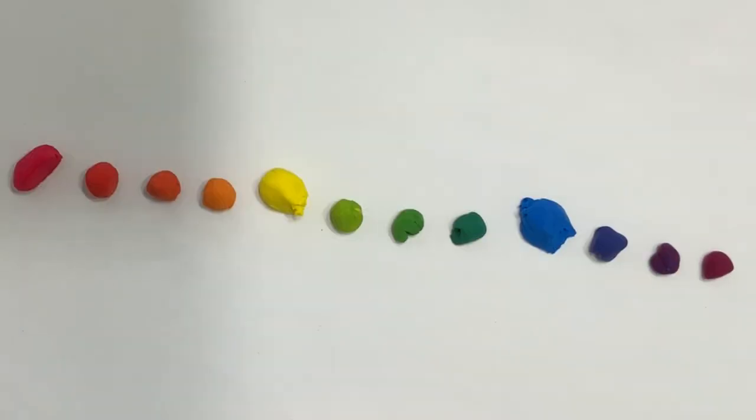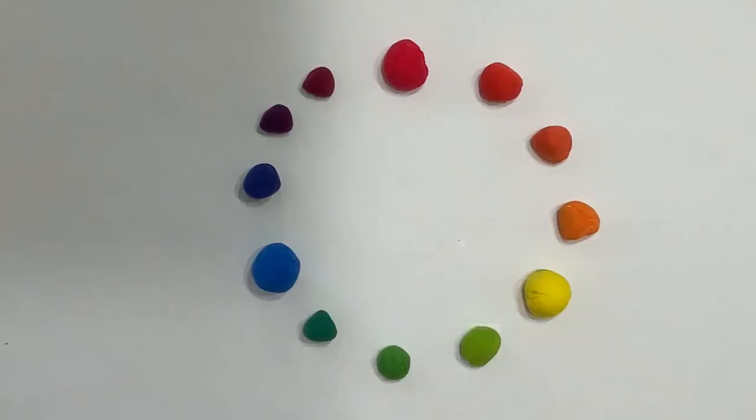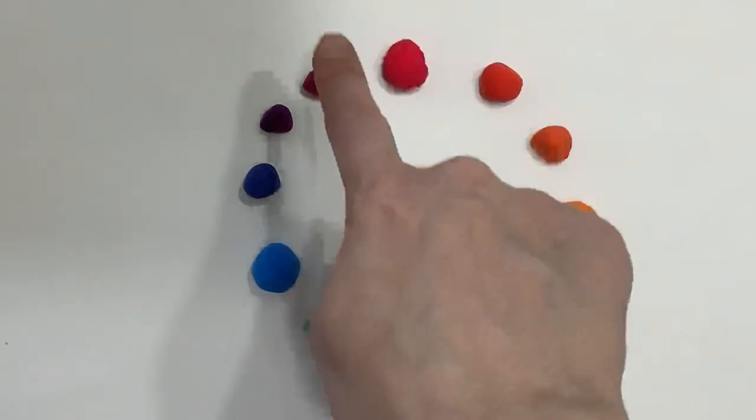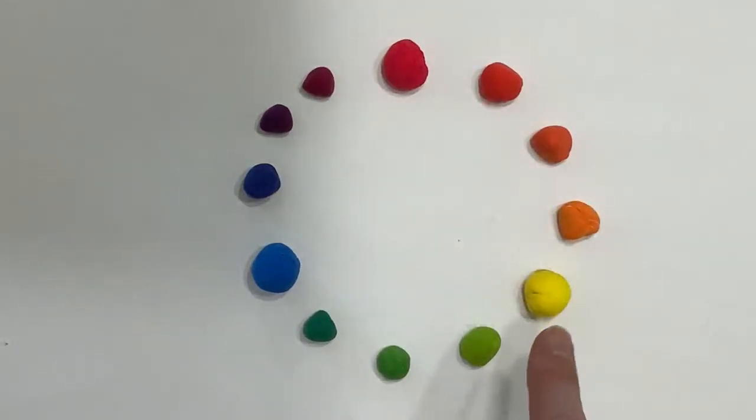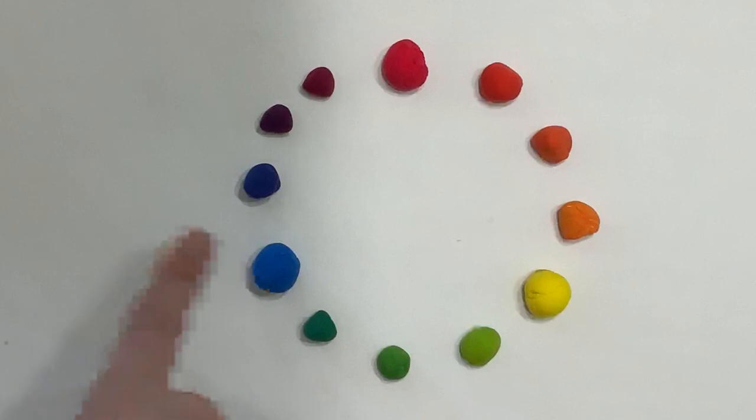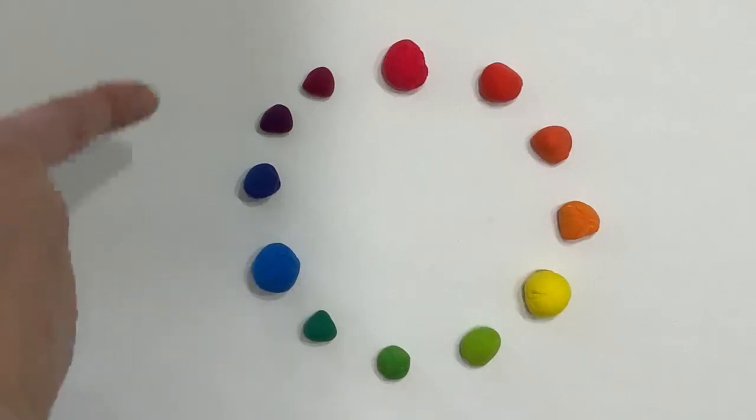Now if we were to connect the ends, we would have the full color wheel. Most color wheels start with red, then red-orange, orange, yellow-orange, yellow, yellow-green, green, blue-green, blue, blue-violet, violet, and red-violet.